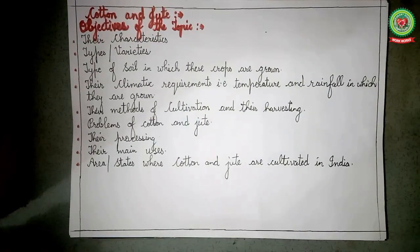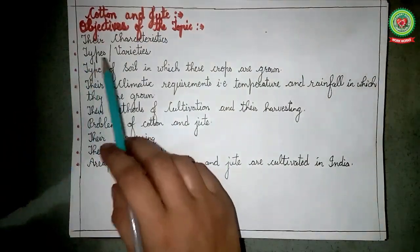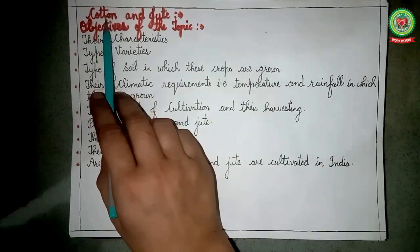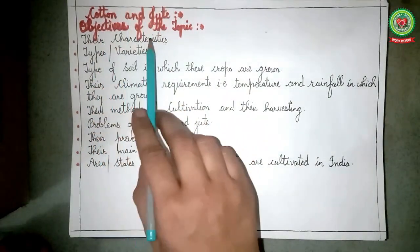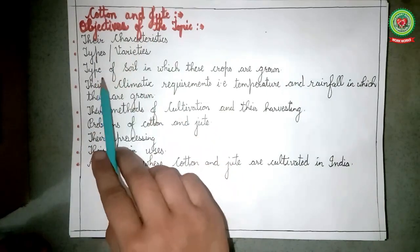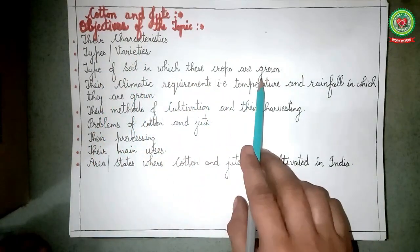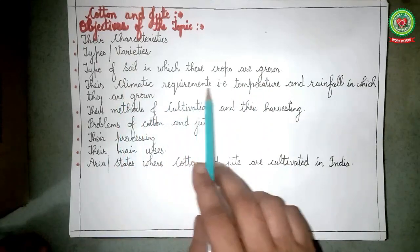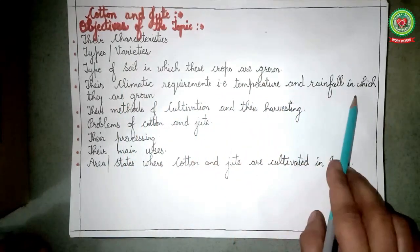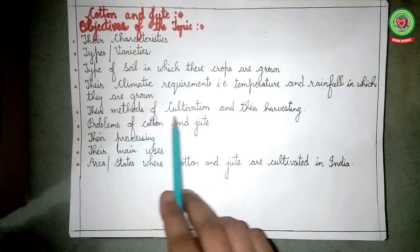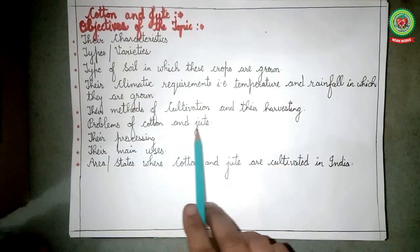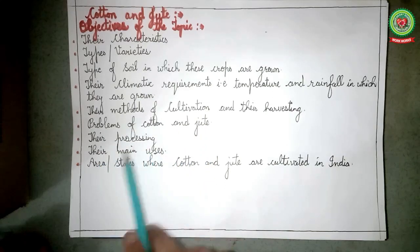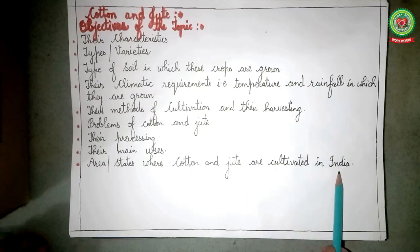In the previous videos we studied the two major cash crops — cotton and jute — covering their characteristics, types, varieties, type of soil, climatic requirements such as temperature and rainfall, methods of cultivation and harvesting, problems, processing, main uses, and the area and states where cotton and jute are cultivated in India.